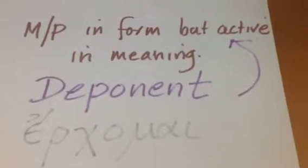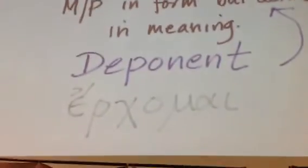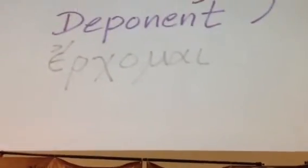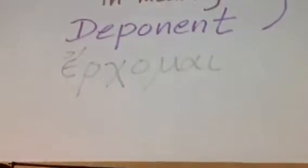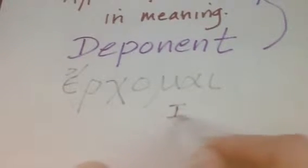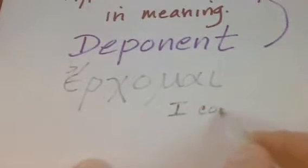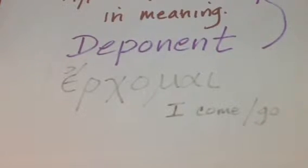And these verbs are still translated actively. So you have ἔρχομαι, which is middle or passive in form, but it's translated I come or I go. Ἔρχομαι - I come or I go.